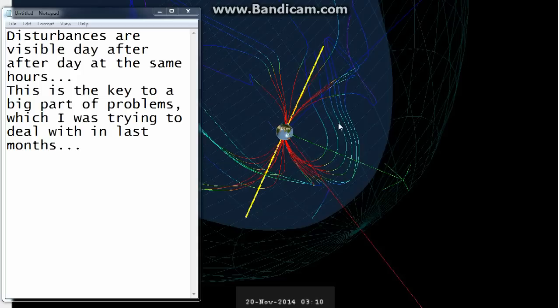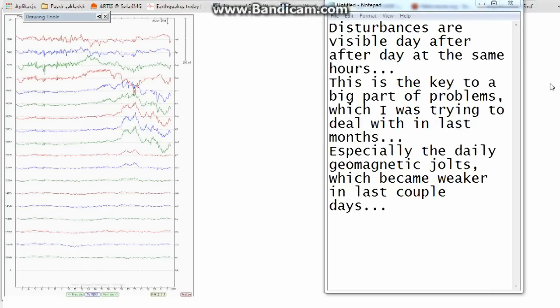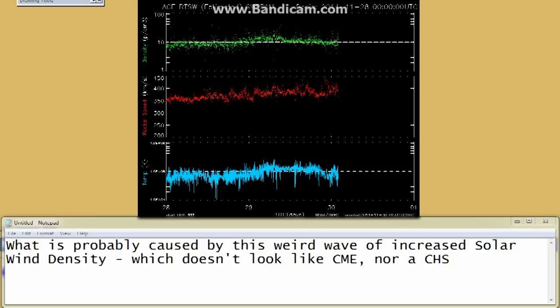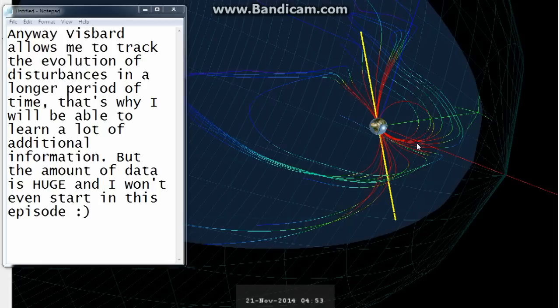This is the key to a big part of problems which I was trying to deal with in the last months, especially the daily geomagnetic jolts which became weaker in the last couple days. What is probably caused by this weird wave of increased solar wind density, which doesn't look like a CME nor a coronal hole stream. Anyway, Visbart allows me to track the evolution of disturbances in a longer period of time. That's why I will be able to learn a lot of additional information, but the amount of data is huge and I won't even start in this episode.